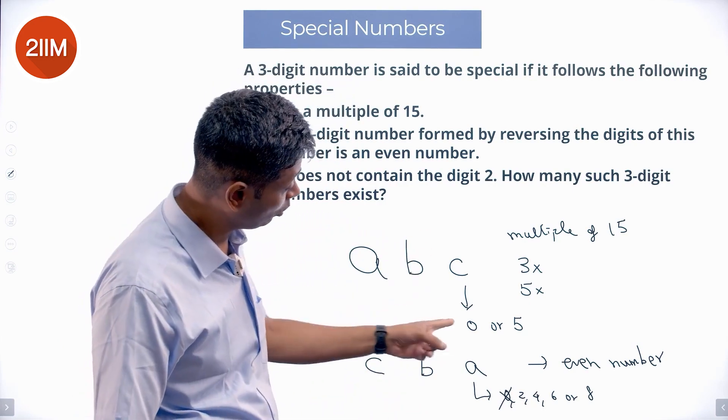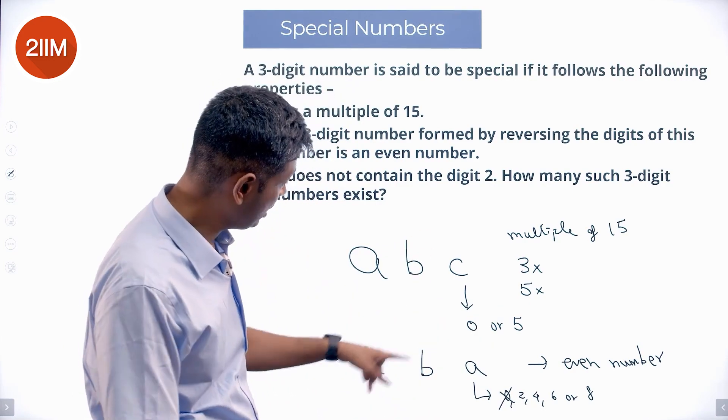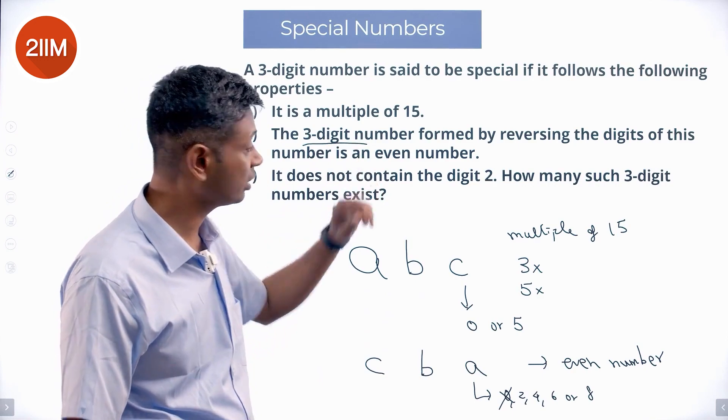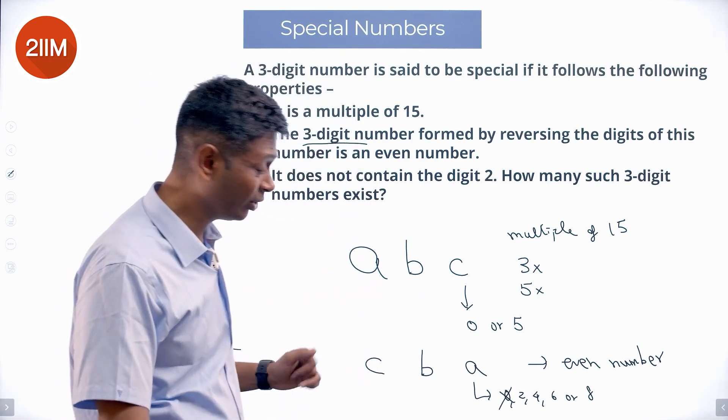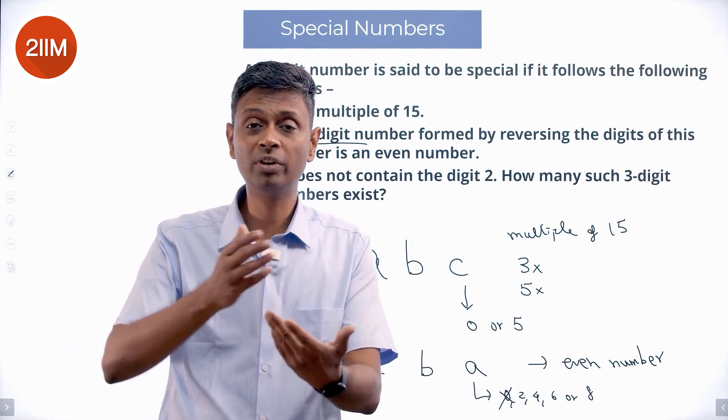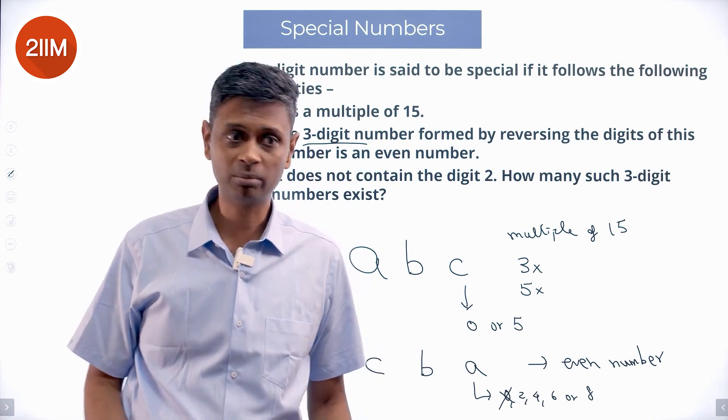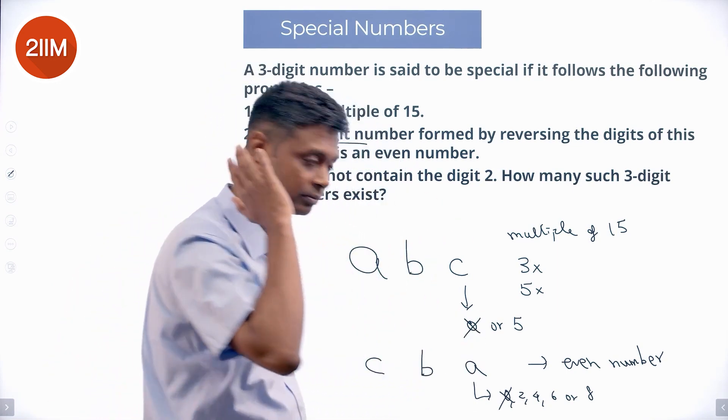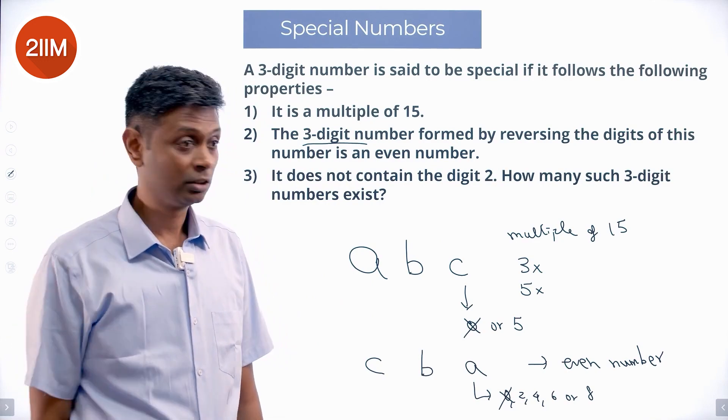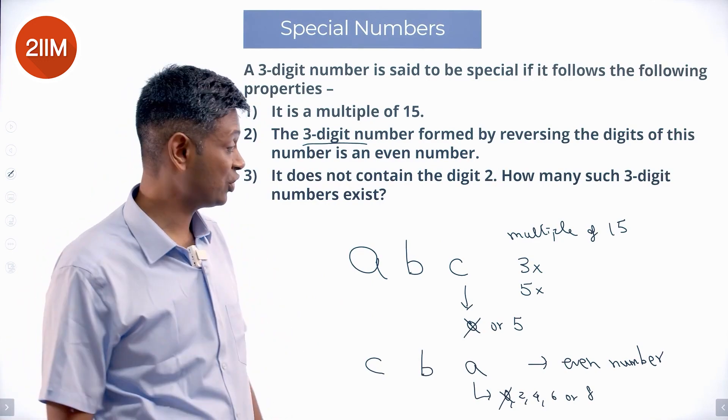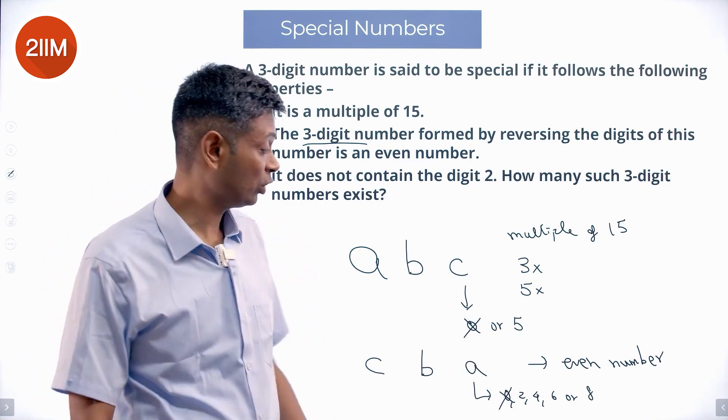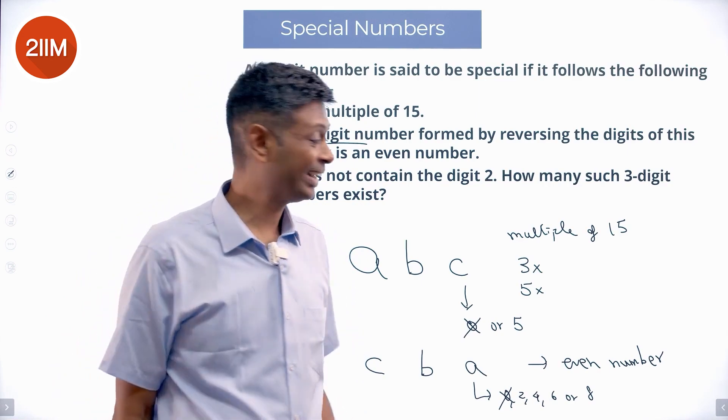Not just that. We said C could be 0 or 5. C, B, A is a 3-digit number. This cannot be 0. 0, 5, 6 is not a 3-digit number. It is a 2-digit number. So C cannot be 0 either. So now we are getting somewhere. We have a 3-digit number A, B, C. A can only be 2, 4, 6, or 8. C can only be 5.